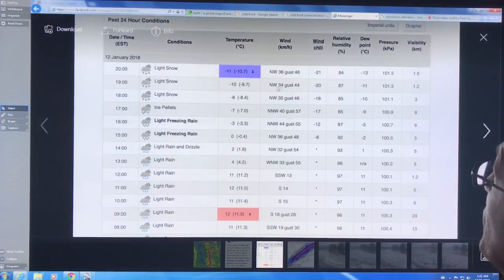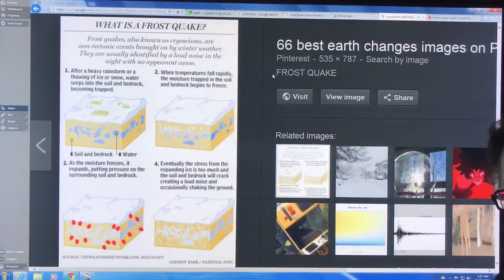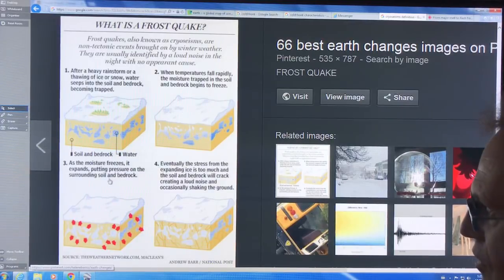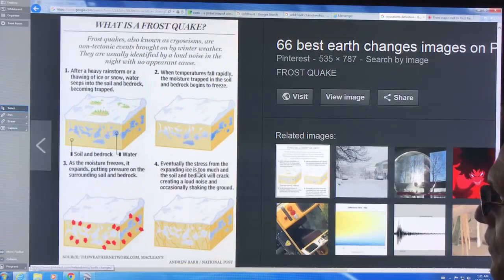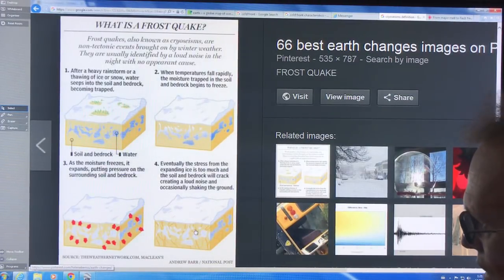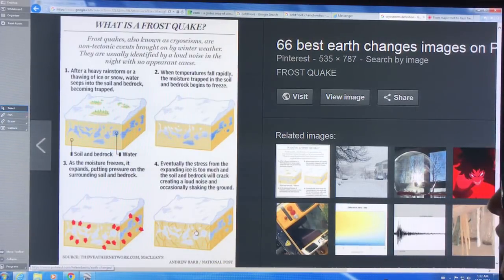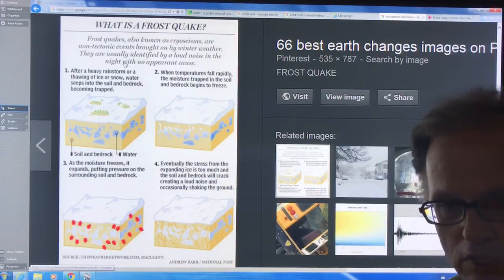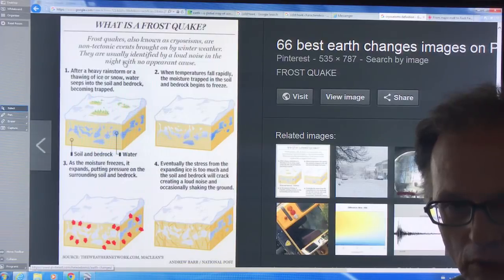You get other interesting things going on like cryoseisms or frost quakes. After you get thawing of ice or snow or a heavy rainstorm, water seeps into the soil and bedrock, becoming trapped. When temperatures fall rapidly, the moisture trapped in the soil and bedrock begins to freeze. It expands. As the moisture freezes it expands, it puts pressure on the surrounding soil and bedrock, pushing them apart. Eventually the stress from the expanding ice is too much and the soil and bedrock will crack, creating a loud noise and occasionally shaking the ground, causing a big loud noise or bang in the night with no apparent cause.